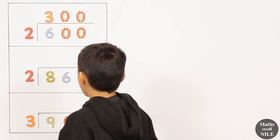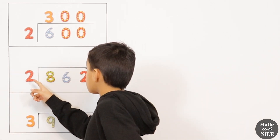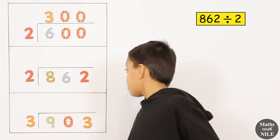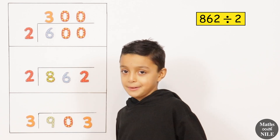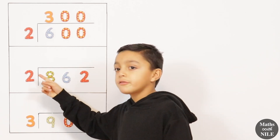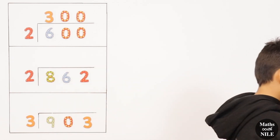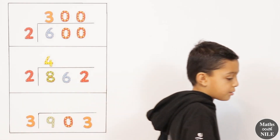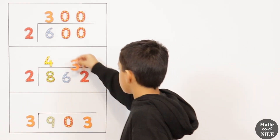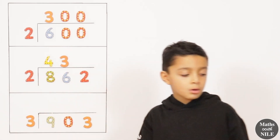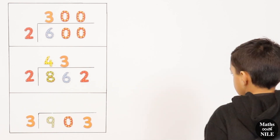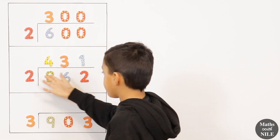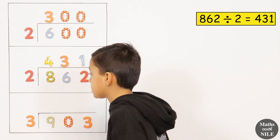The next question is 862 divided by 2. It's a bigger number, but you should never be afraid of big numbers. So we do 8 divided by 2, which is 4. Then 6 divided by 2, which is 3. Then 2 divided by 2, which is 1. So 862 divided by 2 equals 431.